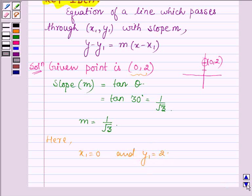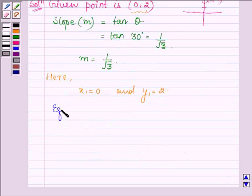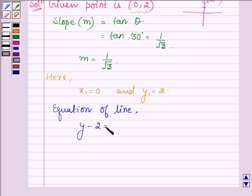Therefore the equation of the line is equal to y - 2 equals m times (x - 0).